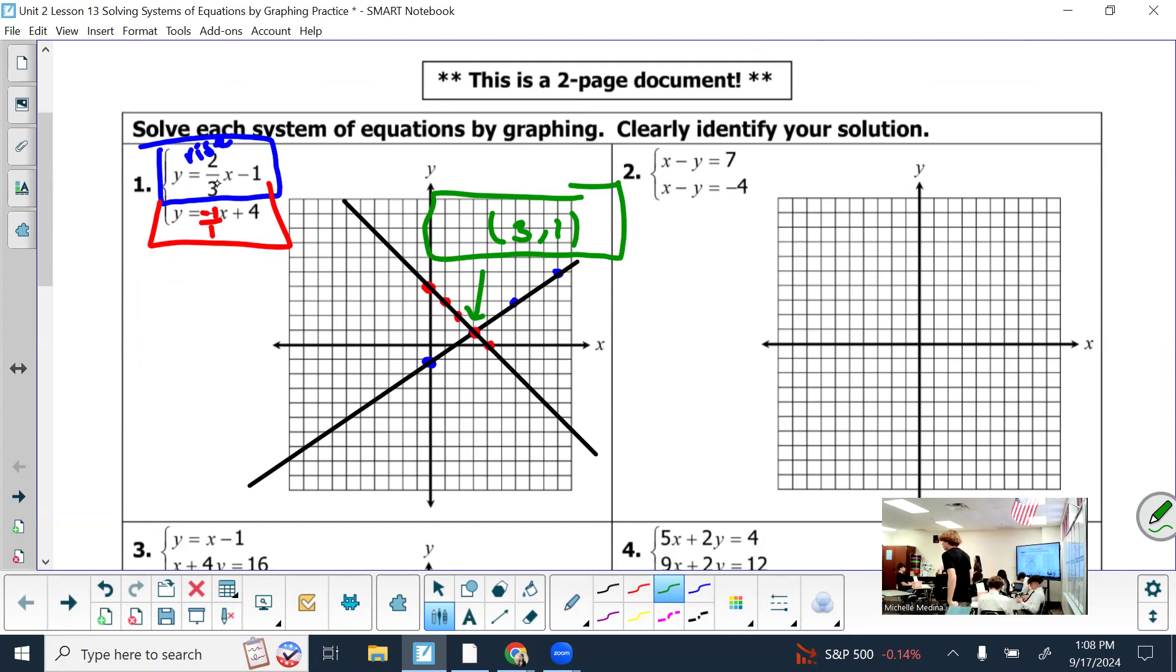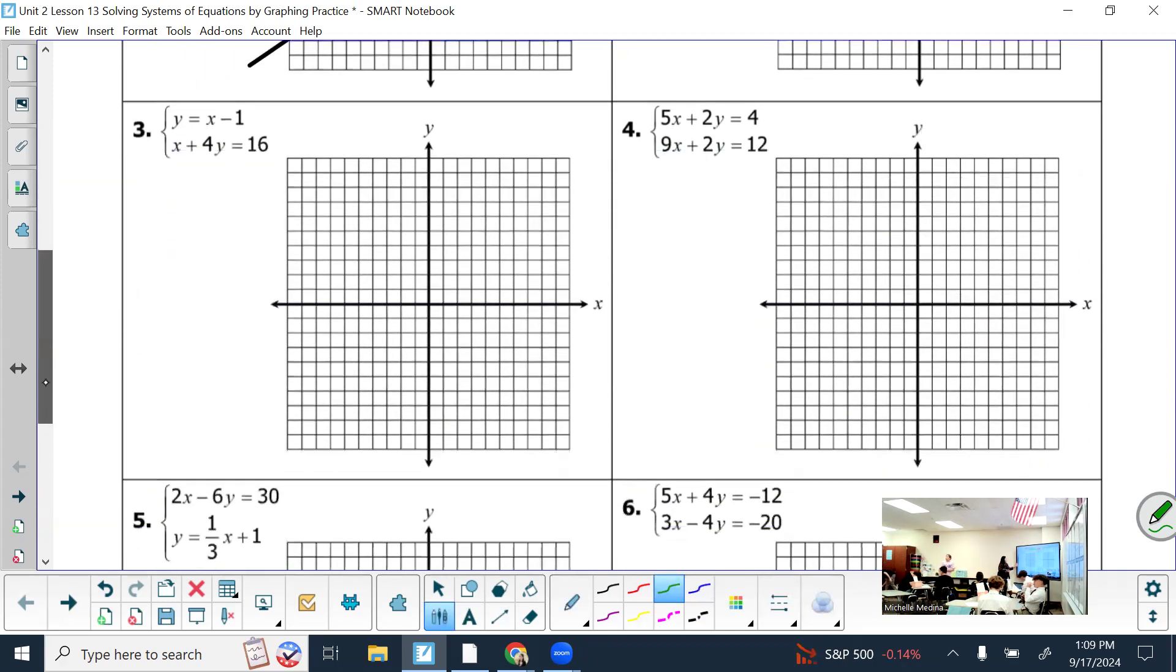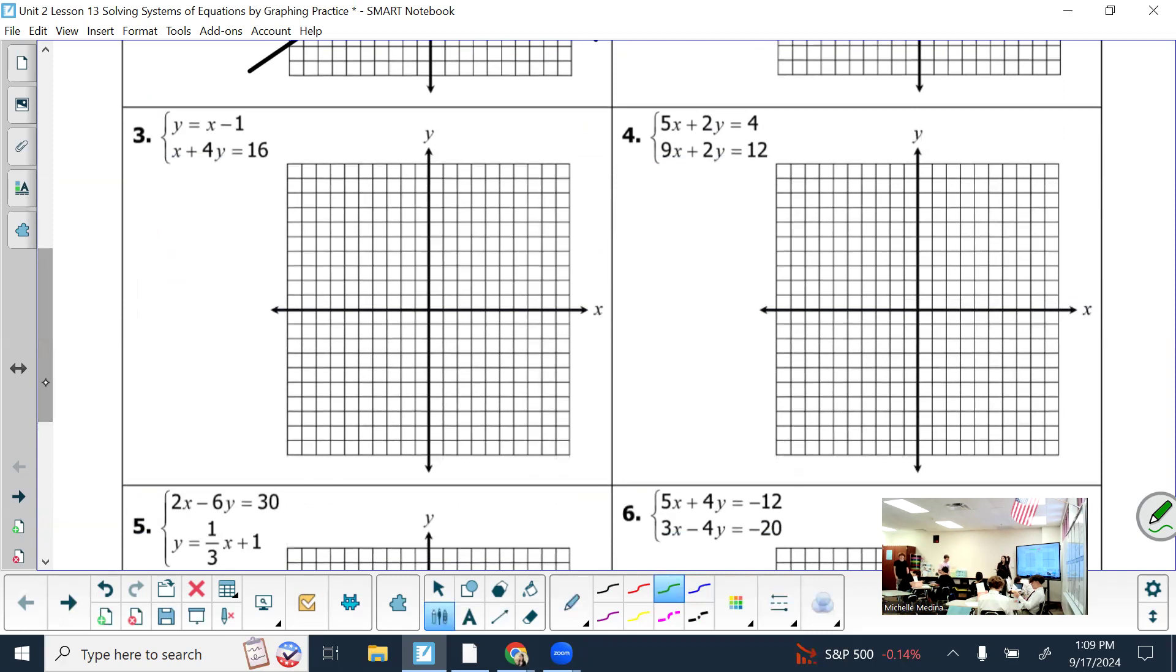Hayden? For number three, it says value for each x minus one. Would the x be one for one? Like how it was in the first one? The slope, I think is what you mean. Yes, for that one, it would be one over one. The slope is always what's in front of the x.